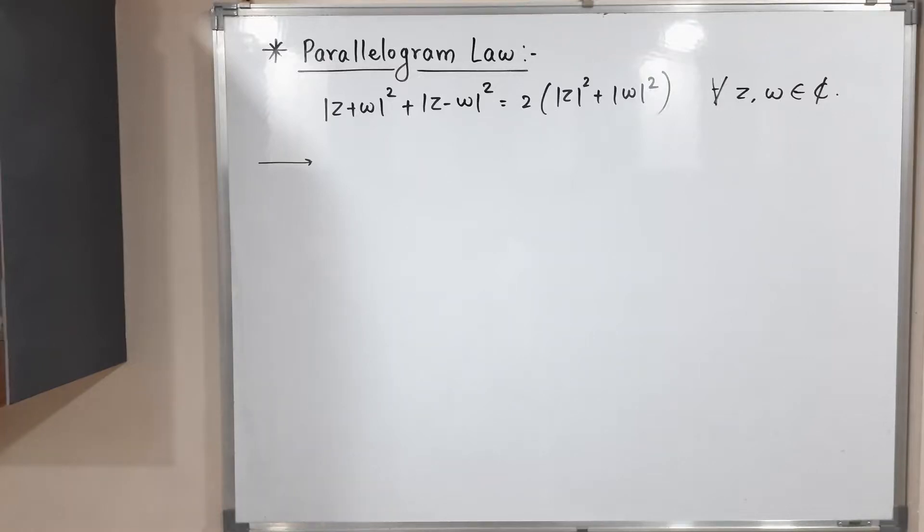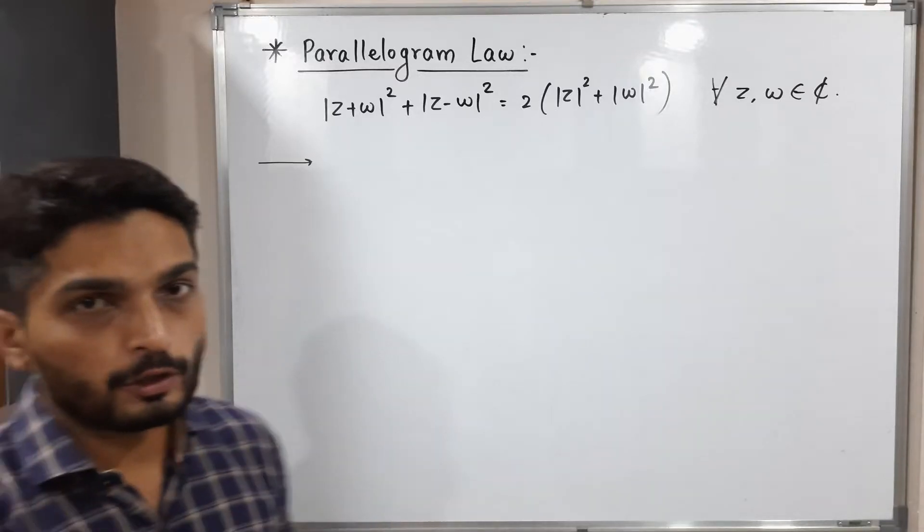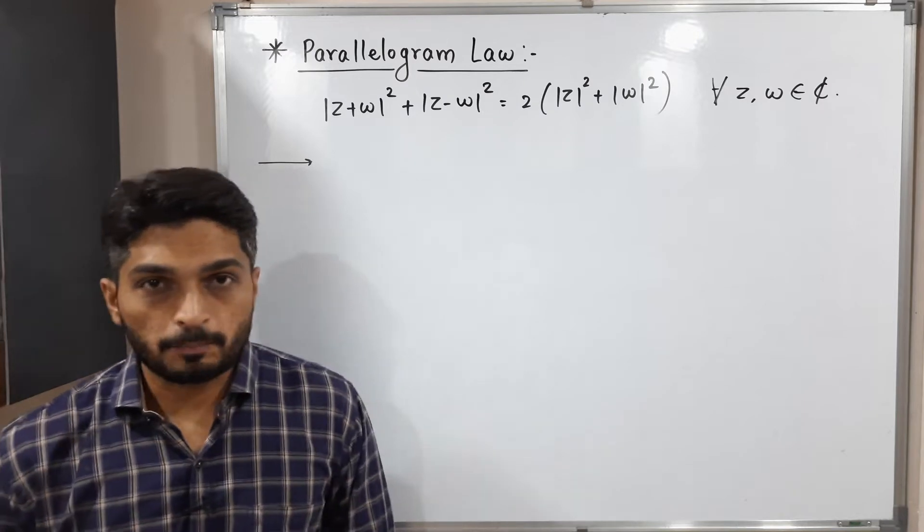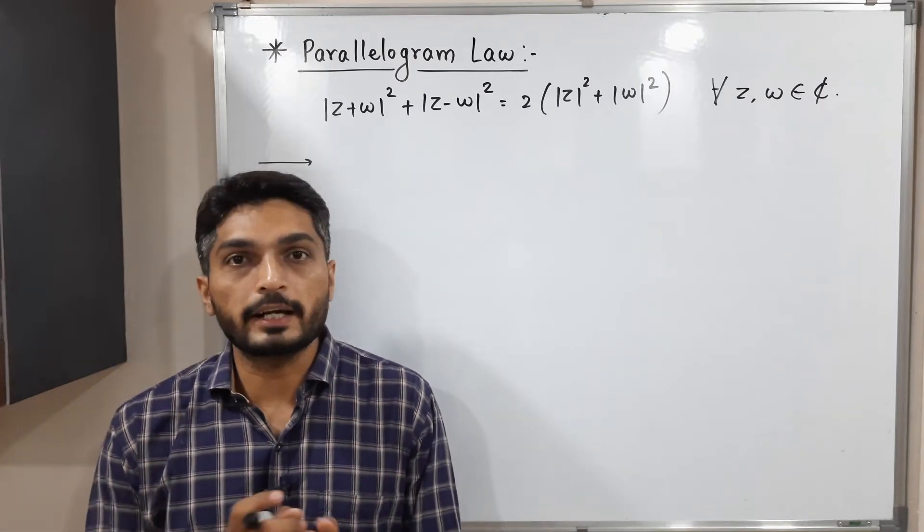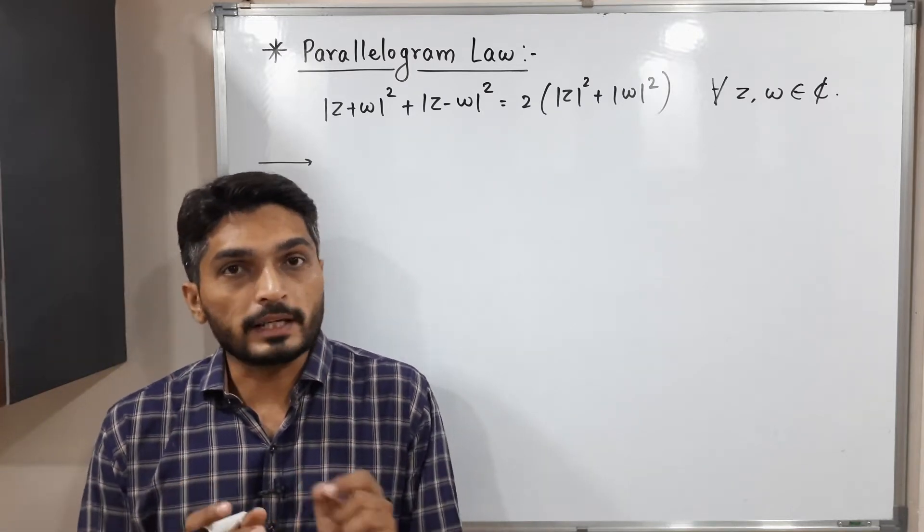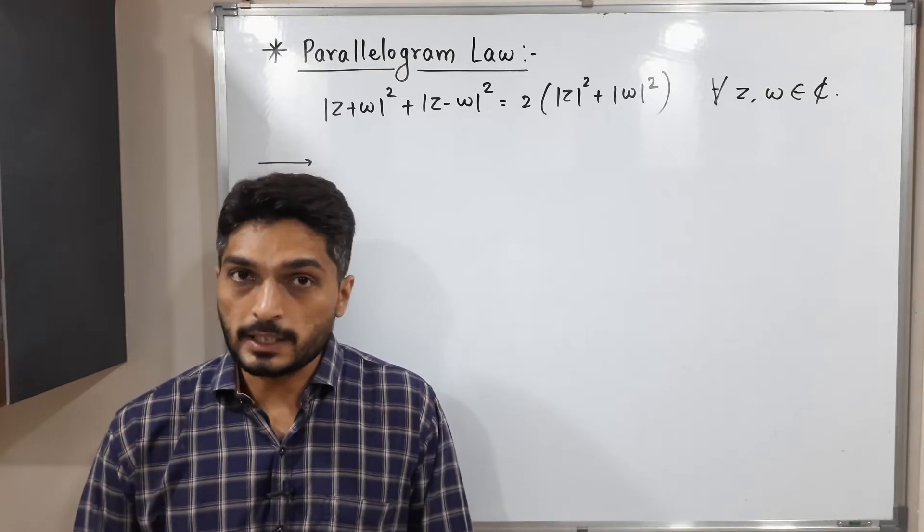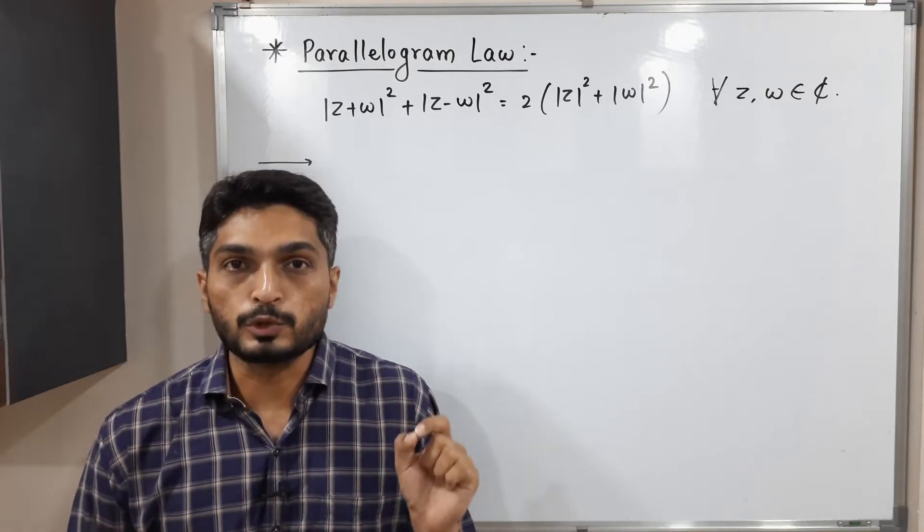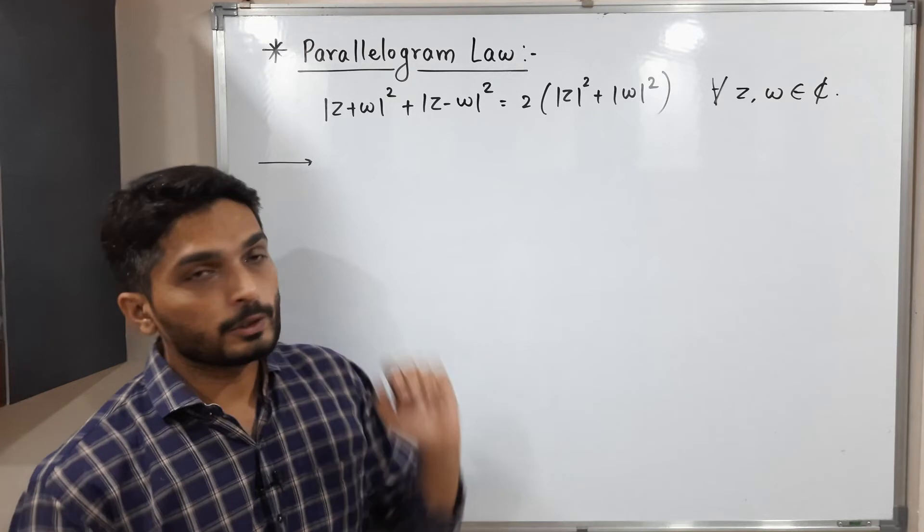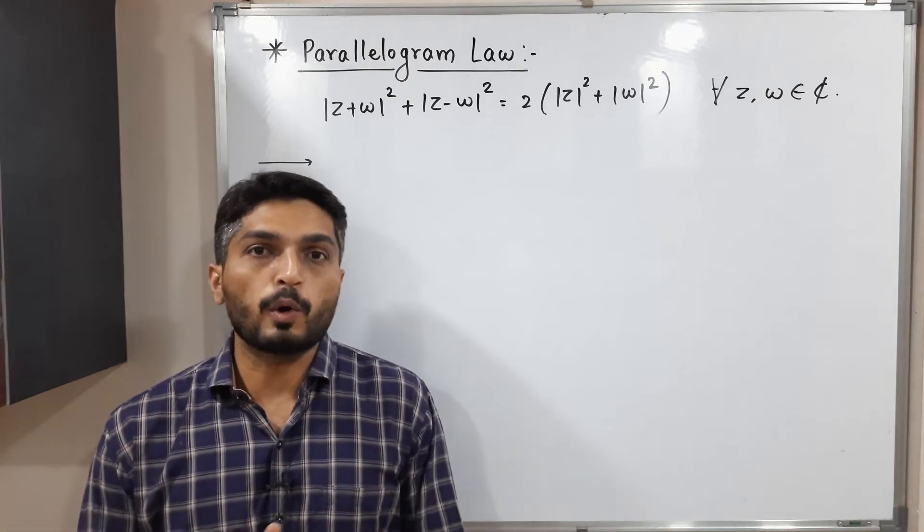Hi everyone, let us discuss this law of parallelogram. So this law says, if you have two complex numbers z and w, then mod z plus w square plus mod z minus w square is nothing but 2 into mod z square plus mod w square.